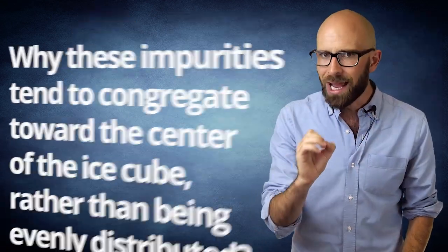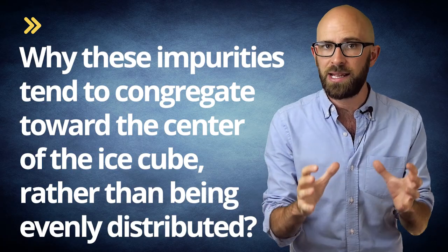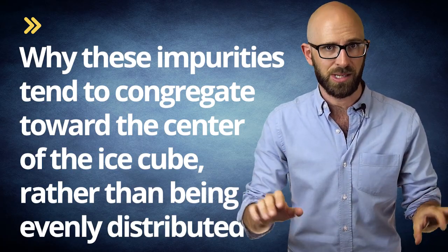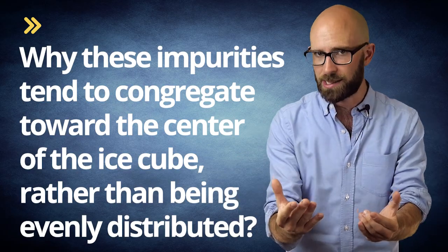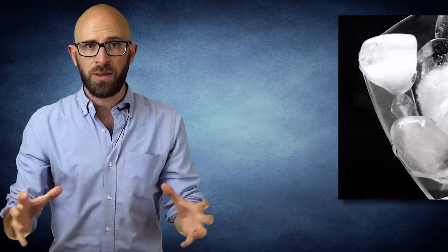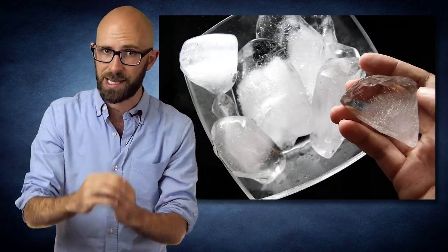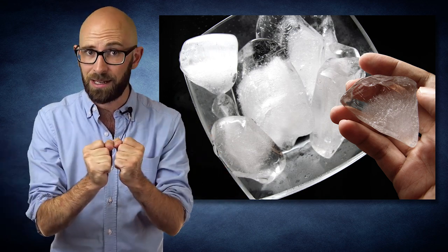You might now be wondering why these impurities tend to congregate toward the center of the ice cube, rather than being evenly distributed. This is because as water freezes, it crystallizes. This crystallization process generally rejects or forms more efficiently without most of the types of impurities found in tap water. This results in the impurities getting pushed into the unfrozen water towards the center as the ice freezes from the outside in.